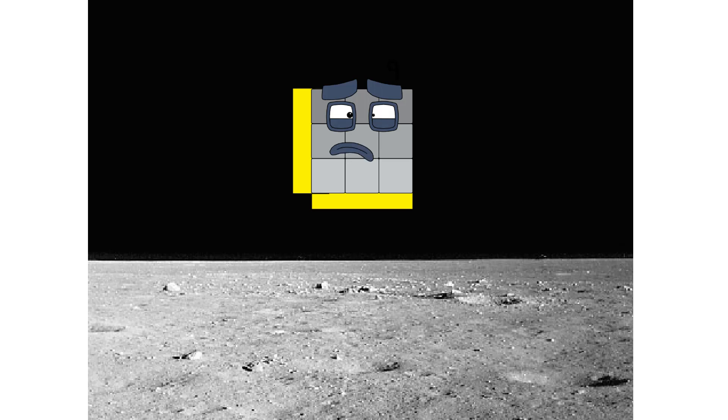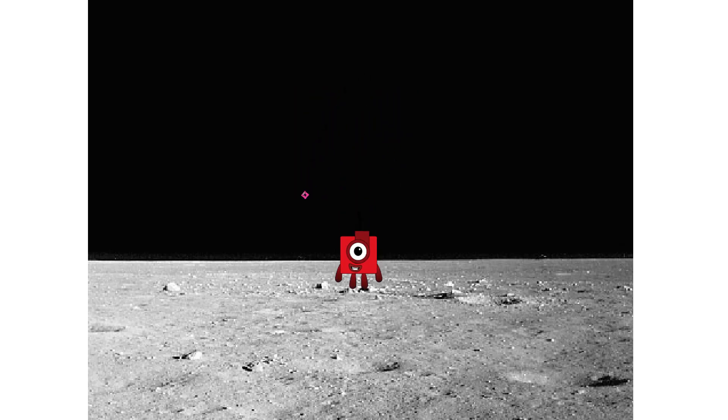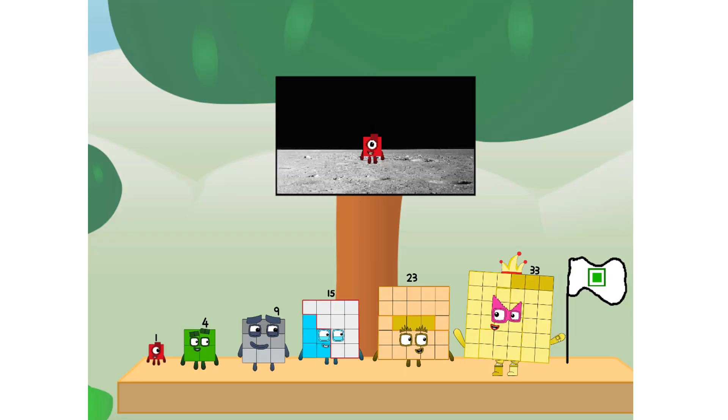Entering lunar orbit, launching lunar lander. Achoo! The square has landed. We did it. The only thing left now is to plant the square club flag. Numberland, we have a problem. I forgot the flag.